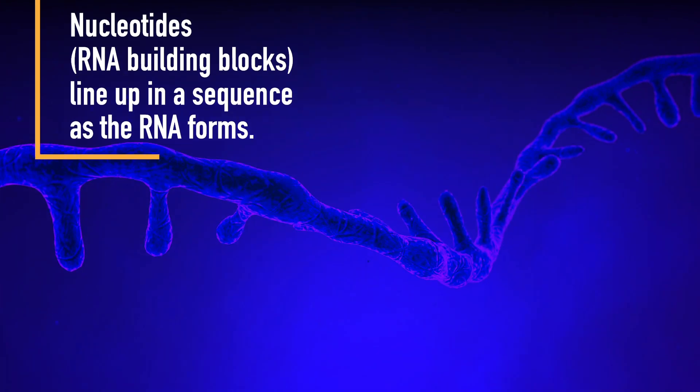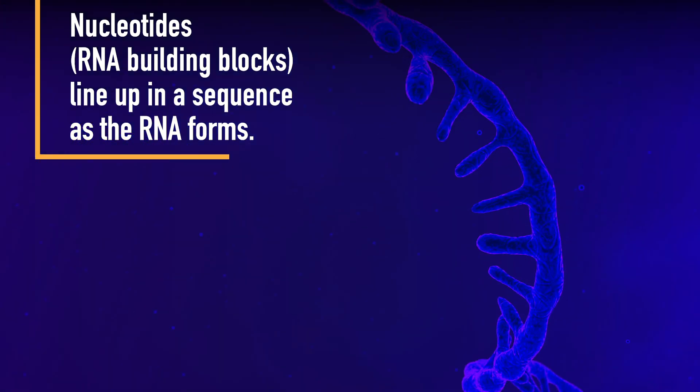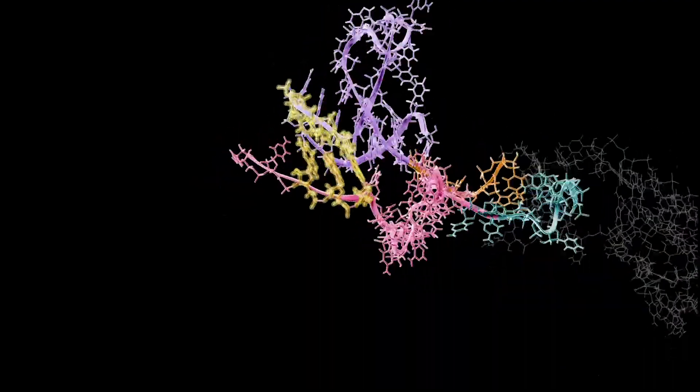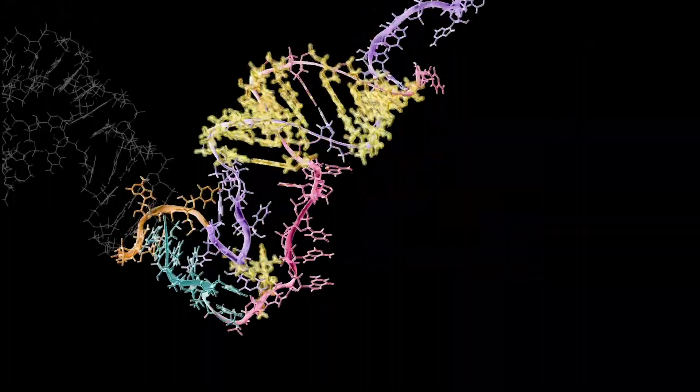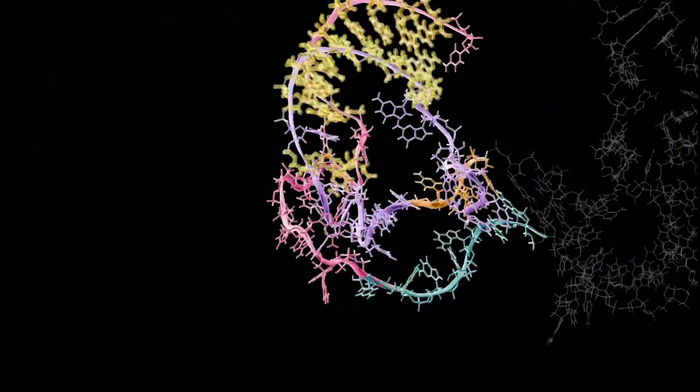The building blocks of RNA, called nucleotides, line up in a sequence as the RNA forms. The nucleotides dance and twist into different three-dimensional shapes, wiggling first into one conformation and then into another.